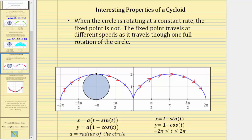For the next property, when the circle is rotating at a constant rate, the fixed point on the circle is not. The fixed point travels at different speeds as it travels through one full rotation of the circle. So even though the circle rotates at a constant rate, the point that traces out the cycloid curve is traveling at different speeds throughout each rotation of the circle.